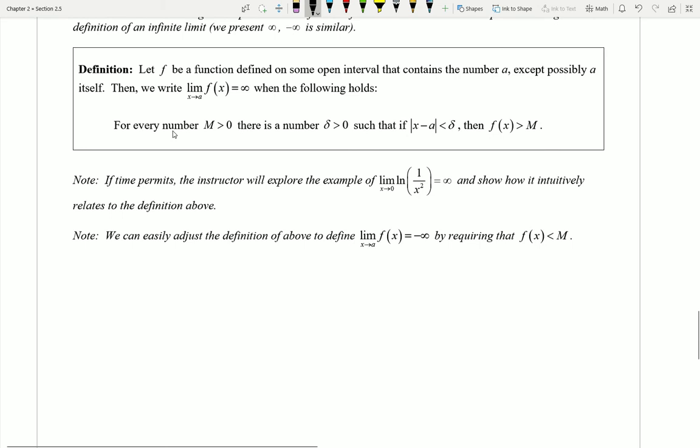Before I read the statement, let's quickly draw a picture of a graph that goes up towards infinity at a particular value. So maybe here's a value of a where an asymptote occurs and maybe I have a graph that goes like this. I can see that this is going up towards infinity here, clearly the limit of my function is going upwards.